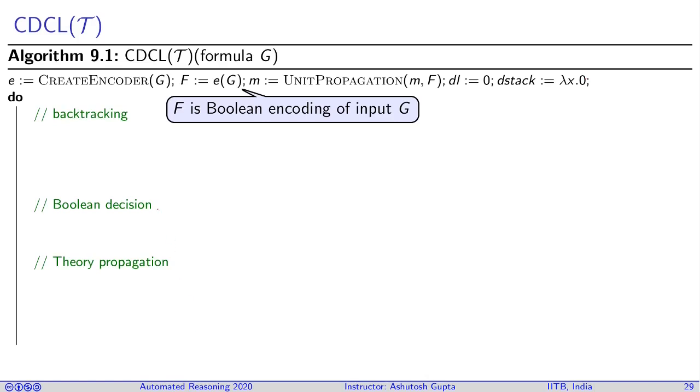There were two key things in earlier CDCL: backtracking and Boolean decision. But now another element comes in called theory propagation. Boolean decision as usual: when you have a partial model, you want to assign a variable to something. You change your decision level, increment the decision level, make a decision on an unassigned symbol, and then you do unit propagation as you do in CDCL. Since F is a Boolean formula, this is a valid statement.